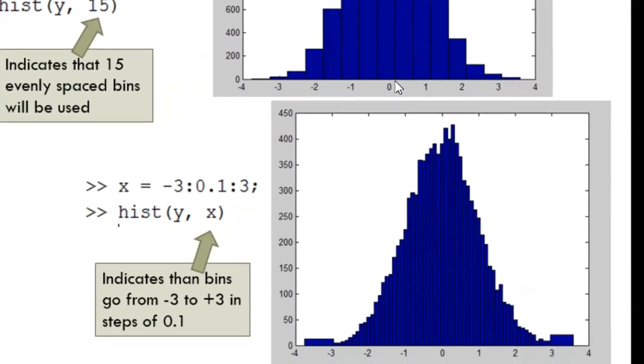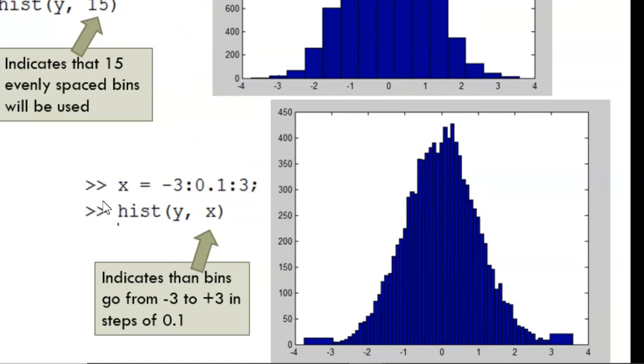For more manual control, we can define the bin placement explicitly. This vector x goes from negative 3 to positive 3 in steps of 0.1, so there will be a bin for values from negative 3 to negative 2.9, another bin for negative 2.9 to negative 2.8, and so on. There was a fair amount of data that fell below negative 3. All of that gets lumped into one category, shown as this large lump at the end.